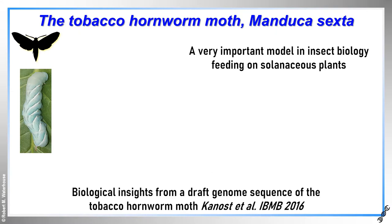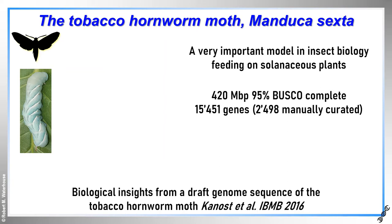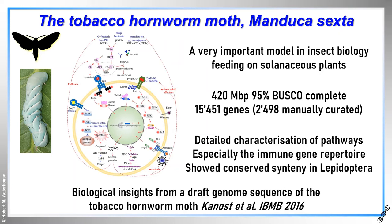Now from Hemiptera to the Lepidoptera. Not so much a pest as one of the best insect models, certainly for biochemistry research, enabled mainly because of the huge size of the caterpillars for easily extracting hemolymph. The 420 megabase pair genome was produced by no means to chromosomal scale, but still showed good completeness in terms of gene content. Importantly, this project really brought together a lot of researchers working on different aspects of Manduca biology, resulting in the manual curation of almost 2,500 annotated genes. This really allowed for detailed examination of many different biological pathways and processes, including the immune system, where we have learnt a lot from Manduca over the years, especially with respect to recognition and effector processes that occur mainly in the hemolymph.